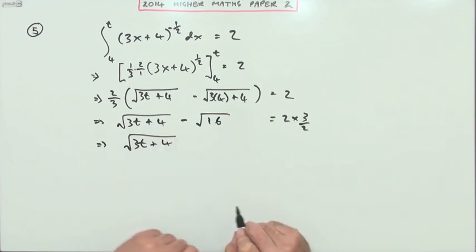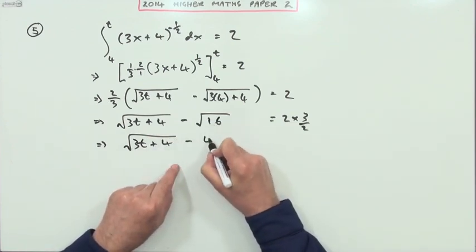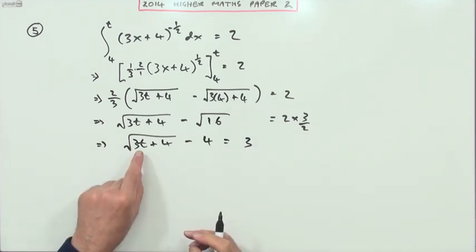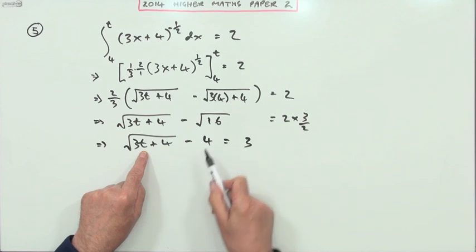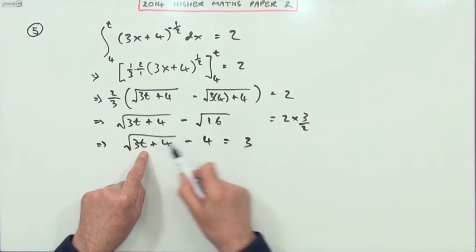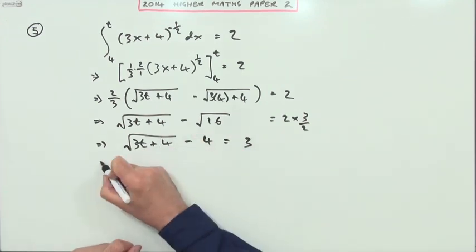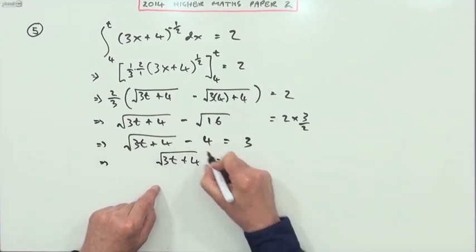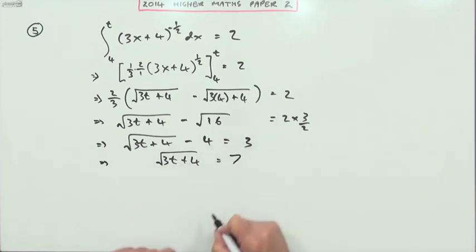So to get my t, all I've got to do is get rid of the 4, get rid of the square root, get rid of the 4, and get rid of the 3. Well let's do that. The square root of 3t plus 4 will be - take the 4 across and add it - that'll be 7.